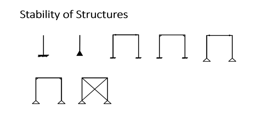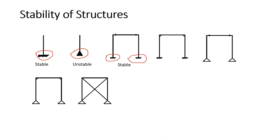Coming to the first one — since you have a fixed support at the bottom, this structure is clearly stable. The second one is unstable since you have a pin support at the bottom. The third one is a stable structure because the supports at the bottom are fixed. Though you have a shear connection between beam and column, the fixed supports make it stable.